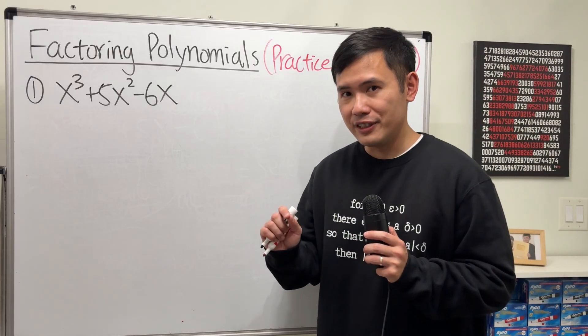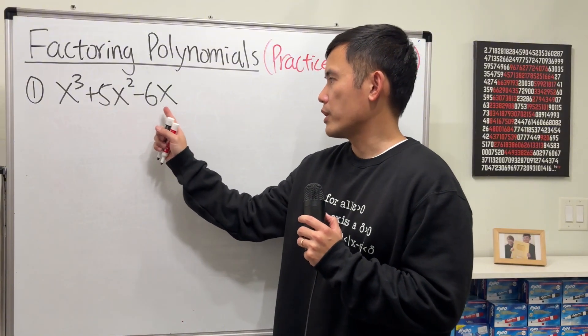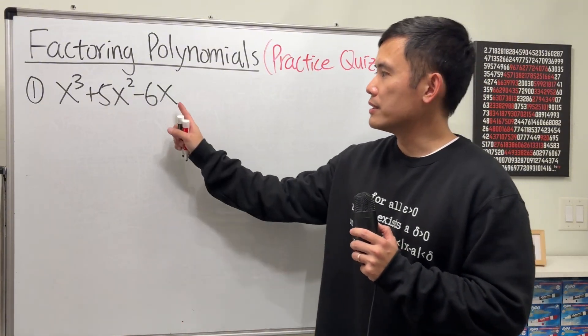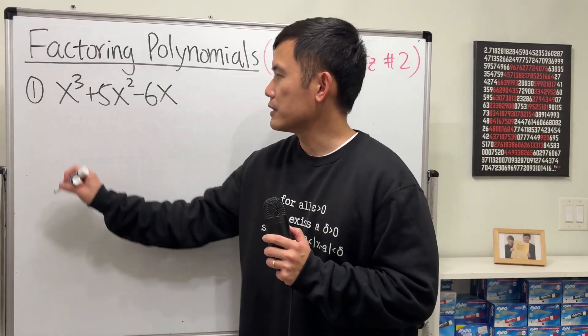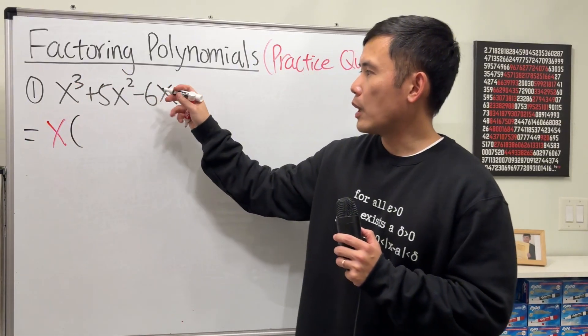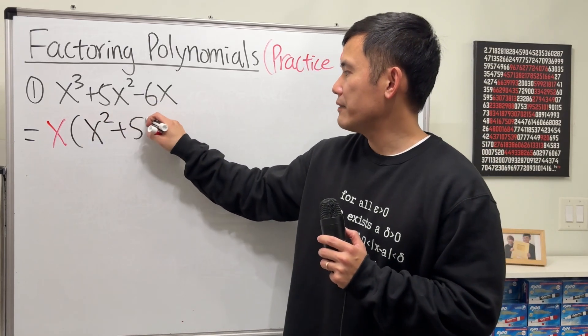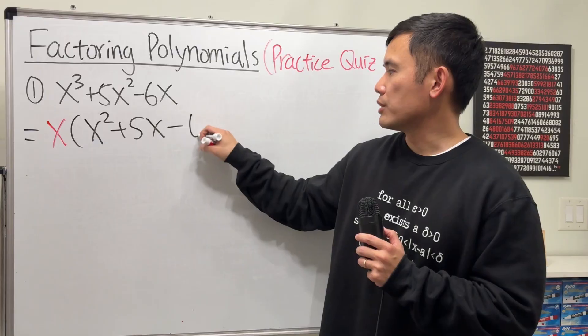Here we go. We are going to factor everything as much as possible. First, we have x³ + 5x² - 6x. Notice everybody has an x, so we can factor that out first. So taking out x, and then we will have all the powers go down by 1. So that's x² + 5x - 6.